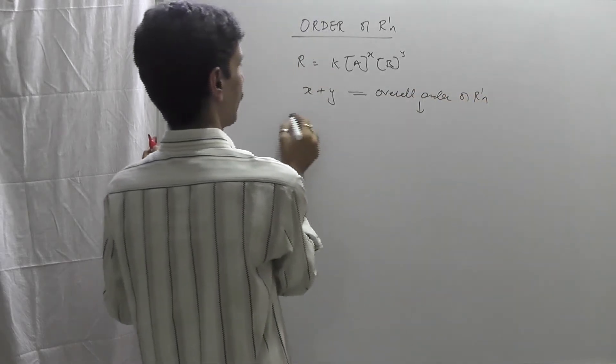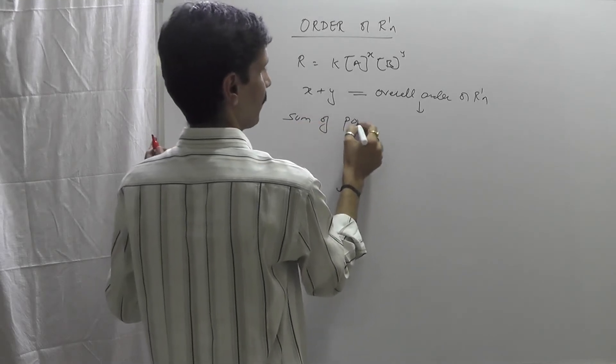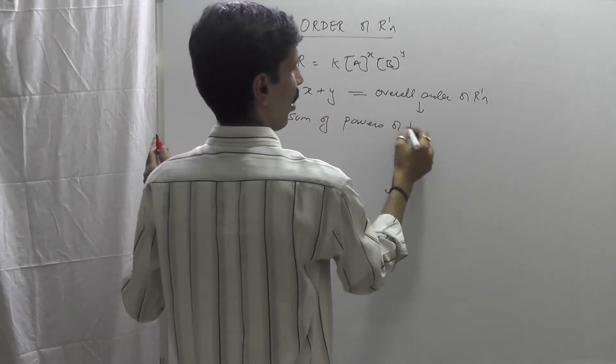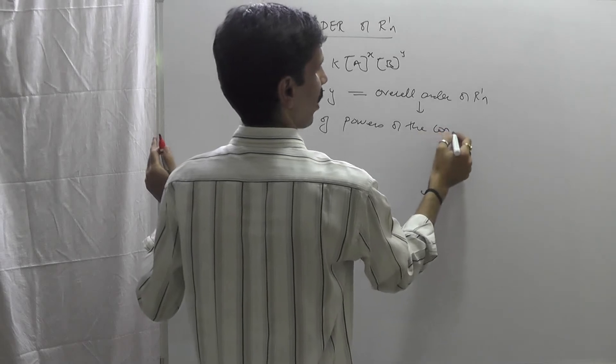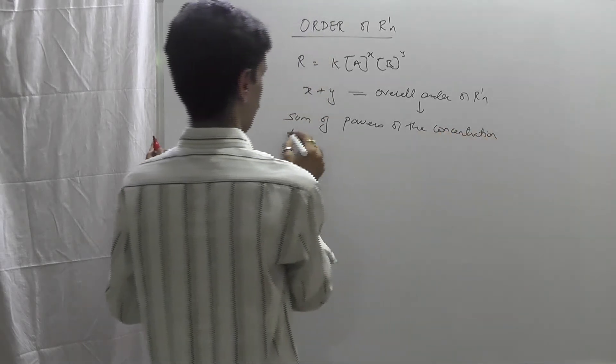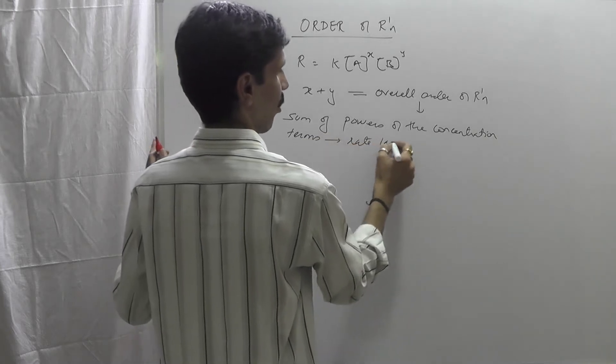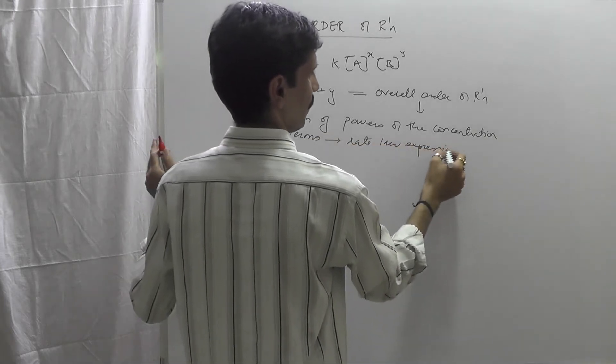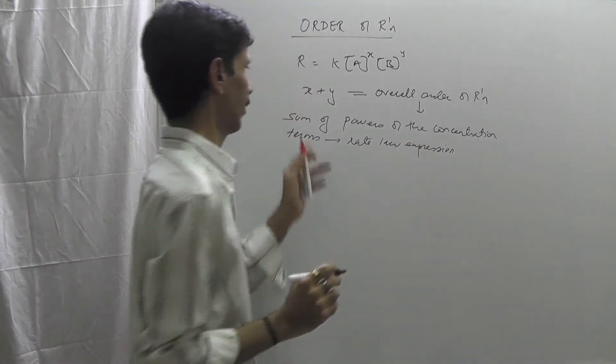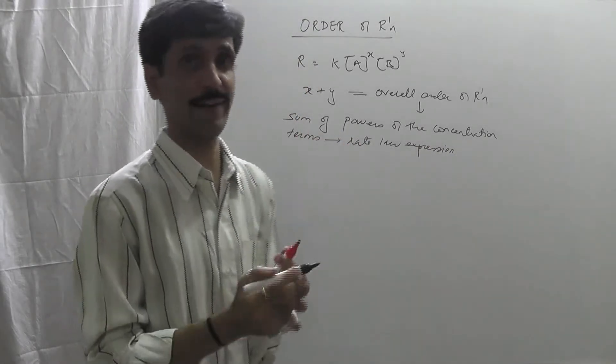So what is the overall order of the reaction? It is nothing but the sum of the powers of the concentration terms which are involved in the rate law expression.